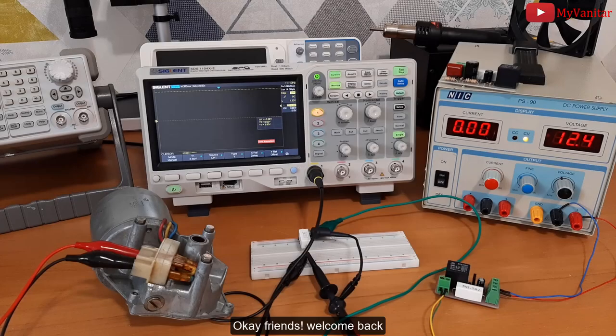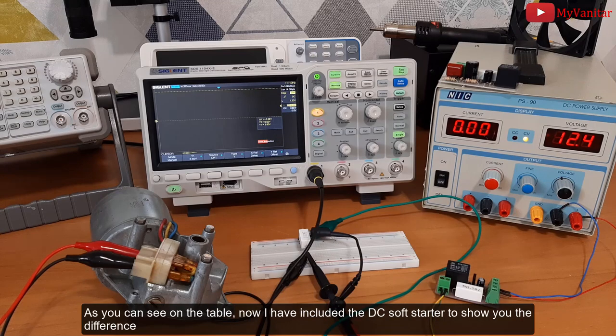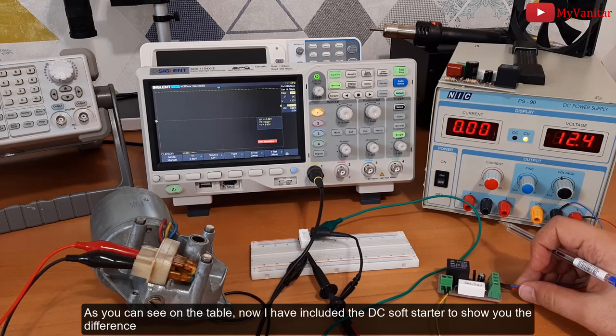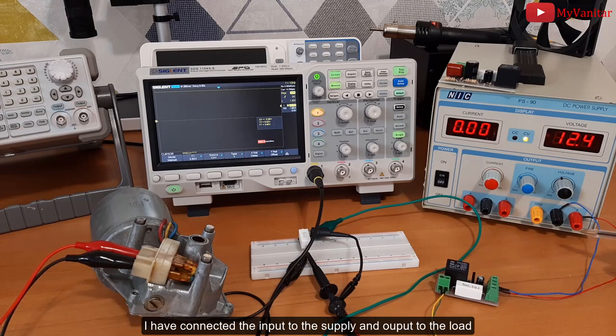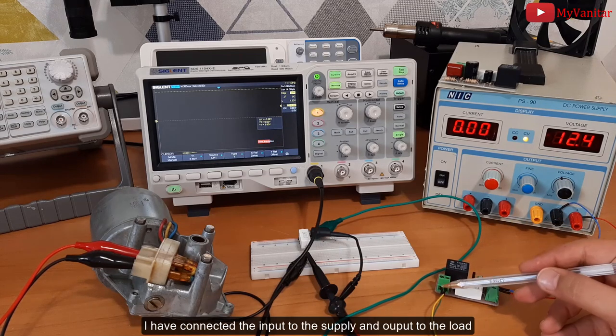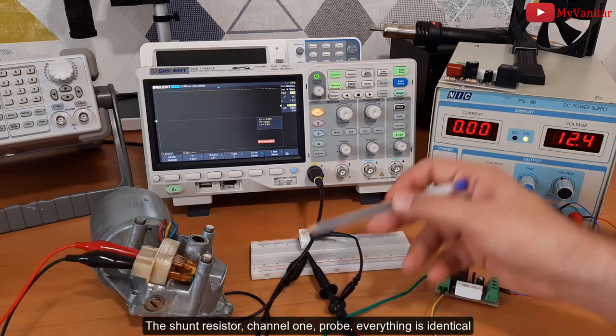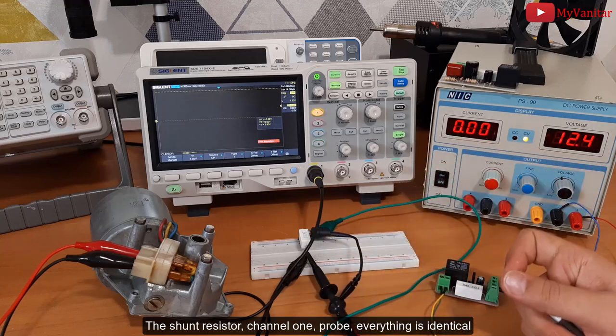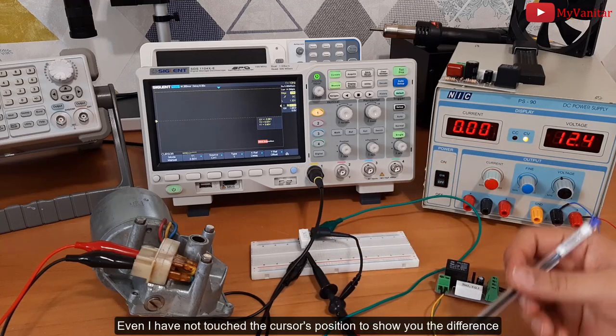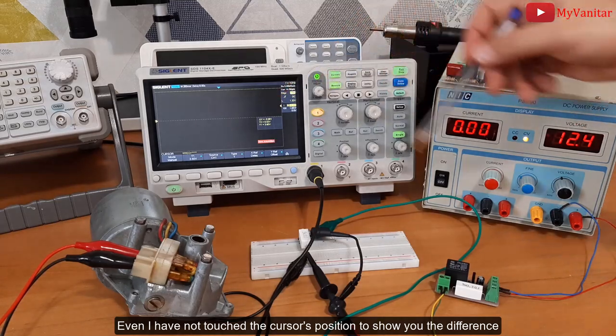Okay friends, welcome back. As you can see on the table, now I have included the DC soft starter to show you the difference. I have connected the input to the supply and output to the load - the shunt resistor, channel one probe, everything is identical. Even I have not touched the cursor's position to show you